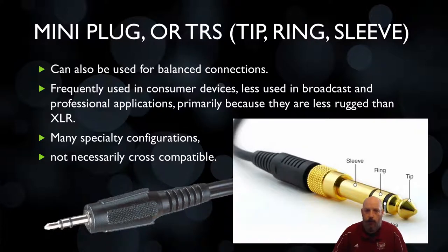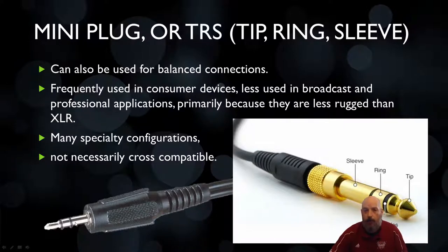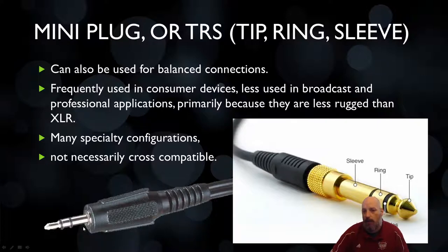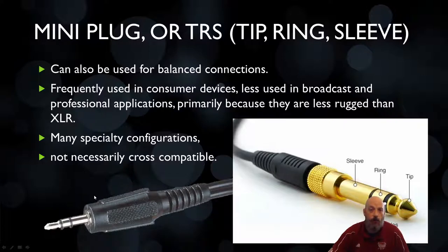There are many specialty TRS configurations — some with just one ring in the middle for left or right audio, some with two, three, or four rings. Depending on the needs, the cable can be adjusted. But that also means it's not necessarily cross-compatible: if you have a cable with four rings it may not fit a receptacle designed for one ring, giving it too much information and causing incompatibility.